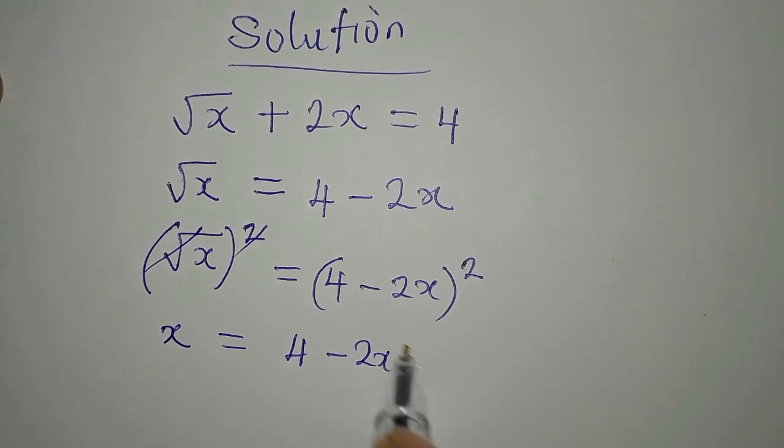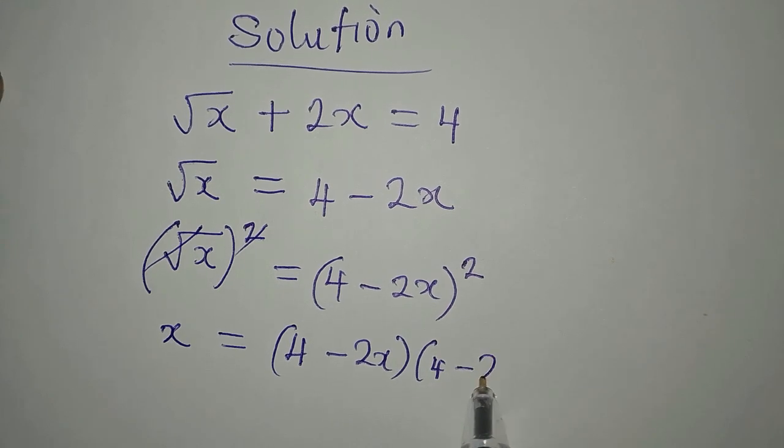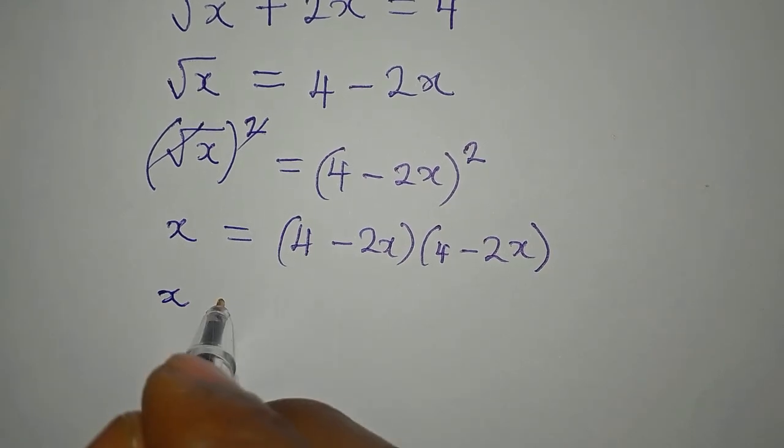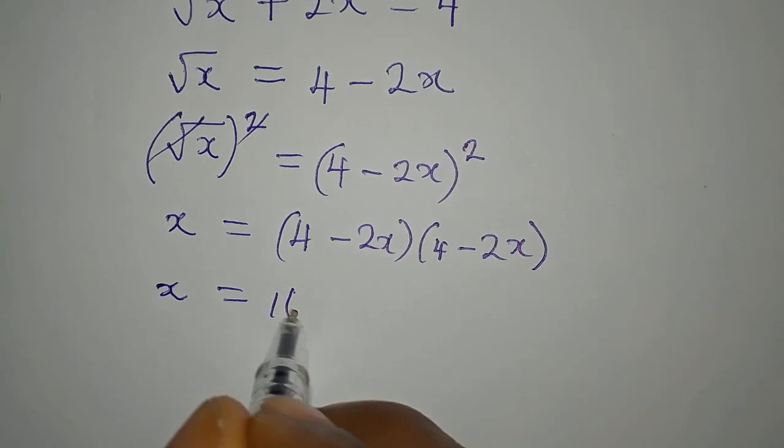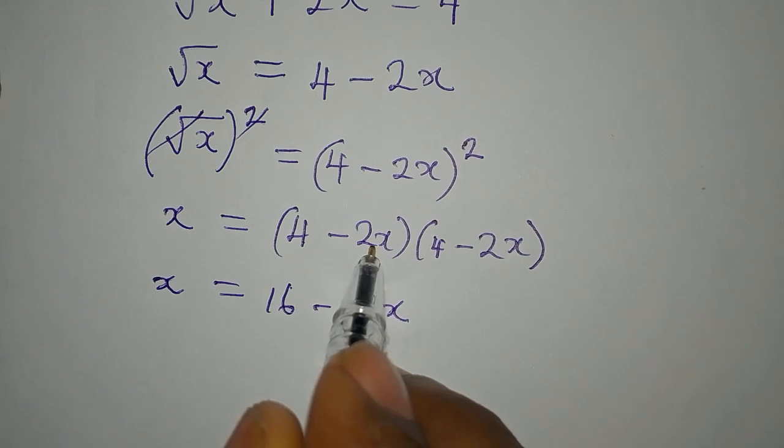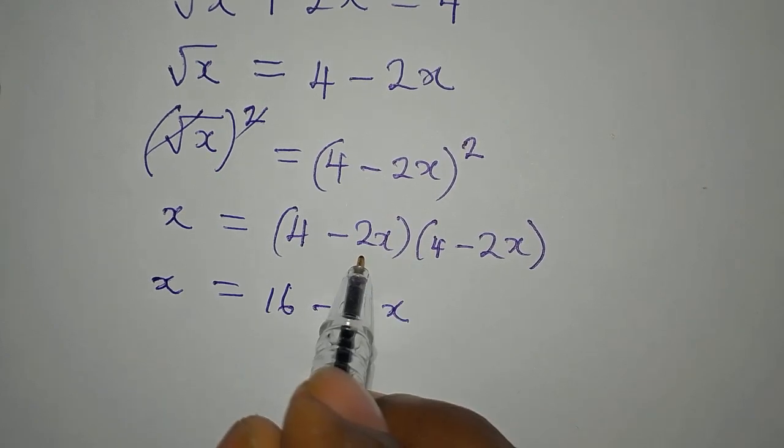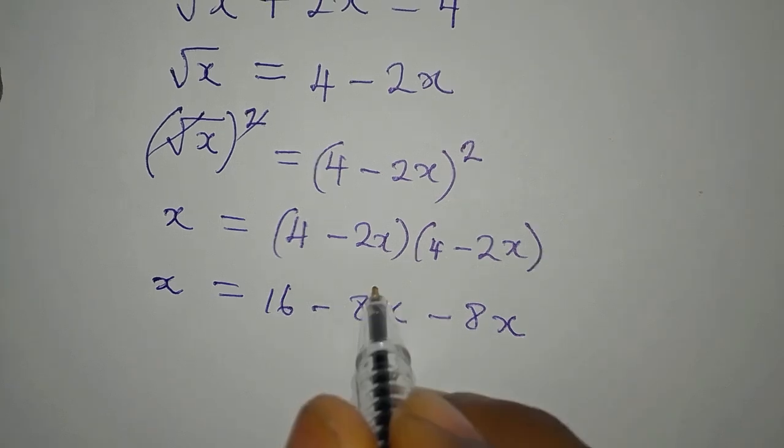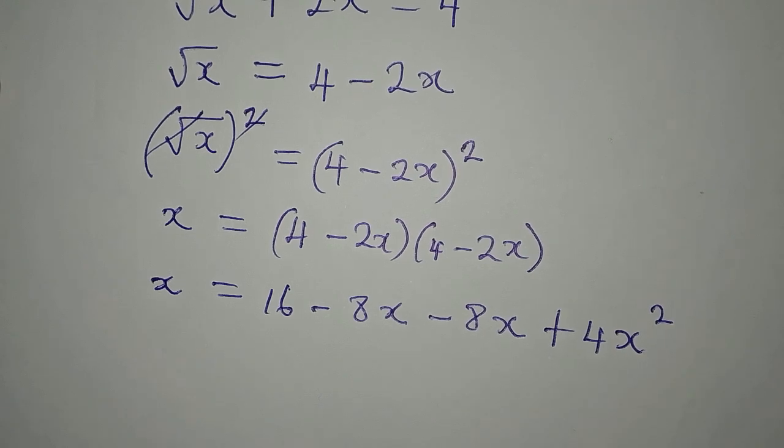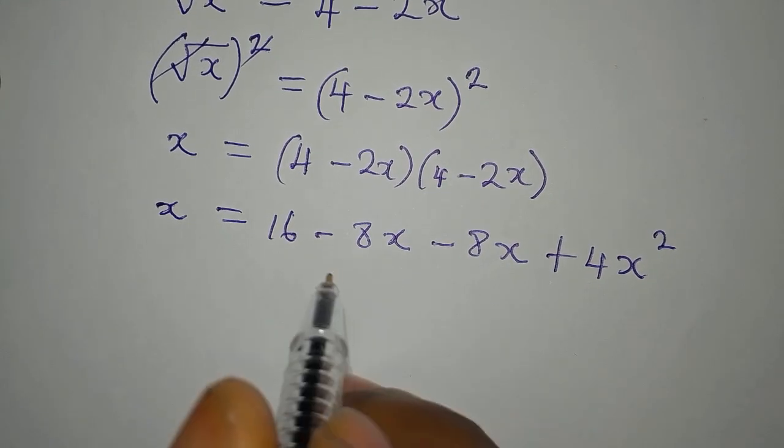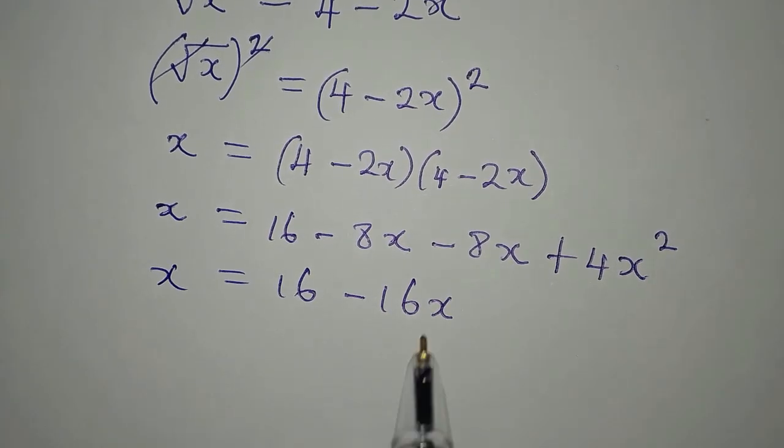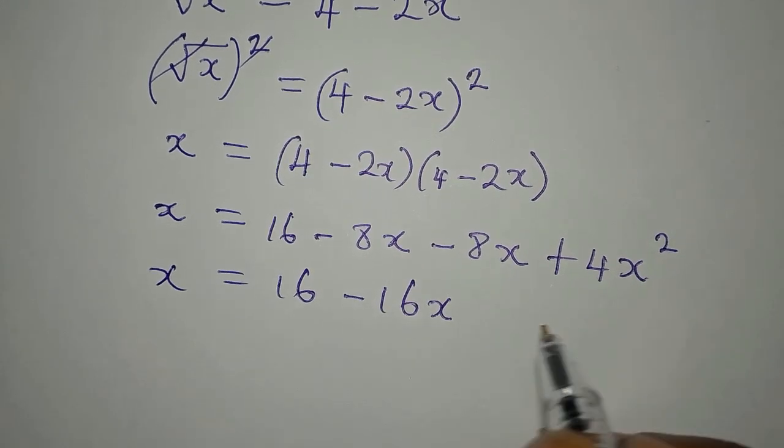So what do we do? x is already out and it will be equal to 4 times 4 is 16, 4 times 2x that would be negative 8x because of this negative, then we are coming to pick this 2x, minus 2x times 4 is minus 8x, minus 2x times minus 2x will be plus 4x squared.